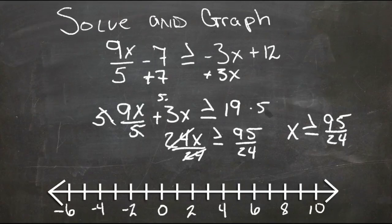Which is just a little bit less than 4. It looks like 96 24ths would be 4, so just a little bit less than 4. So x is greater than or equal to a little bit less than 4. Fill in the circle because it's equal to.